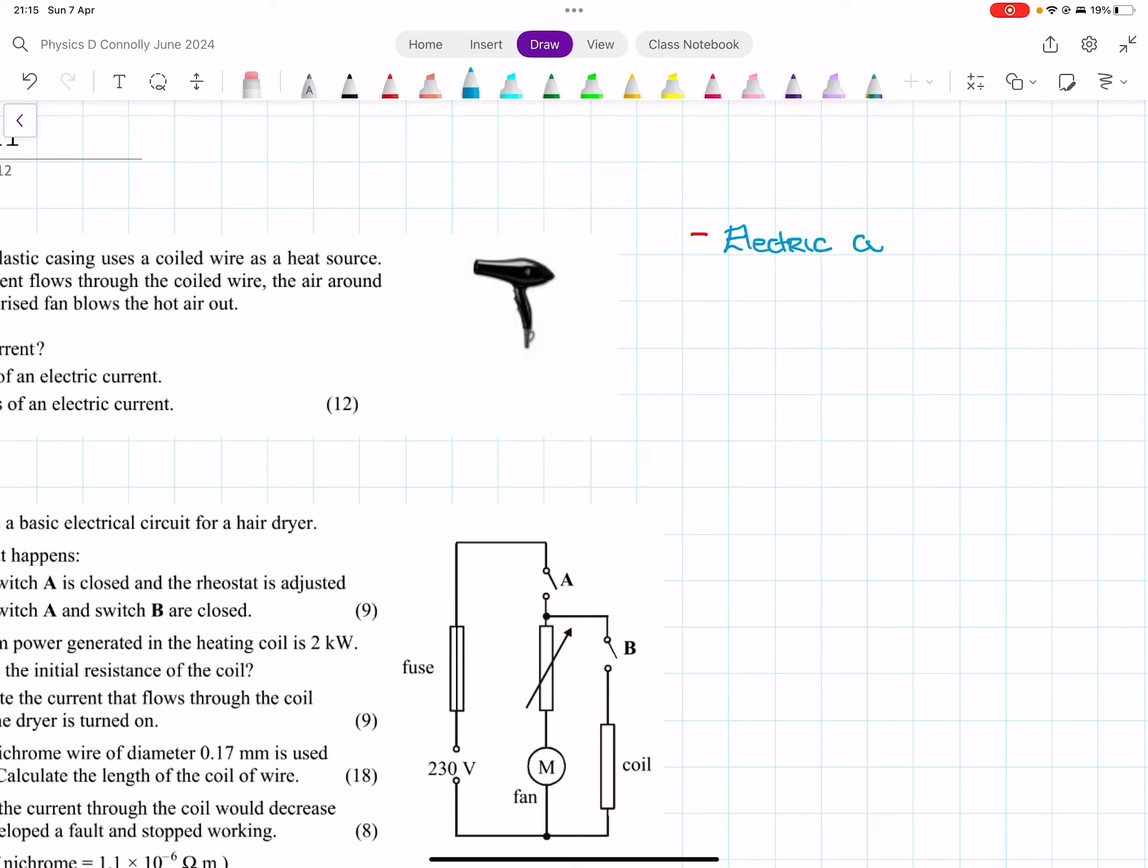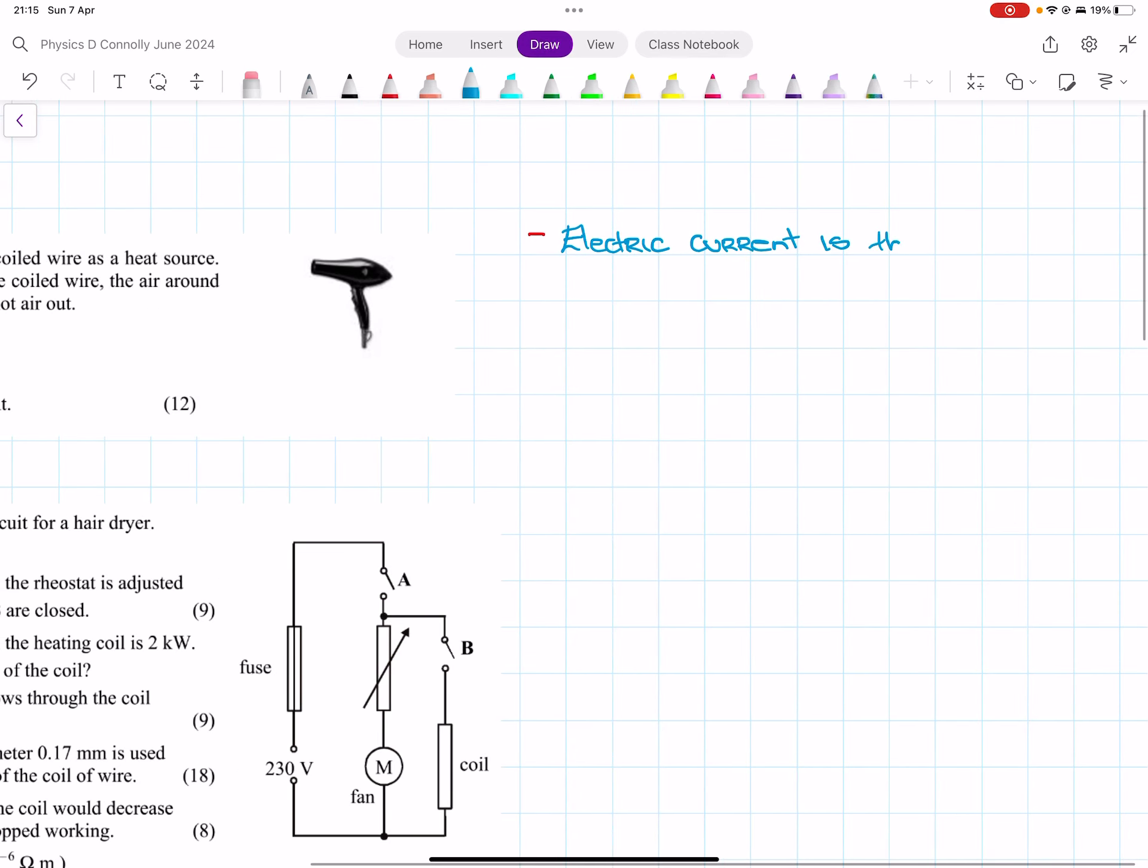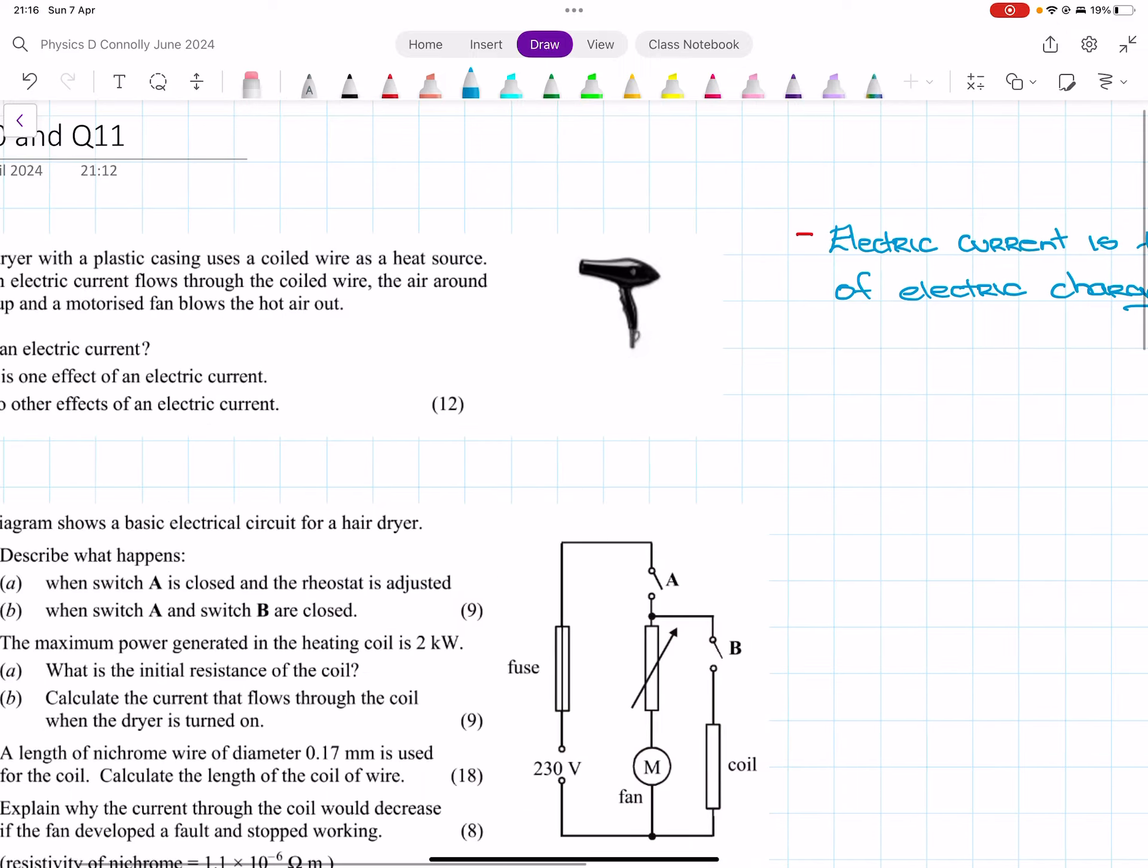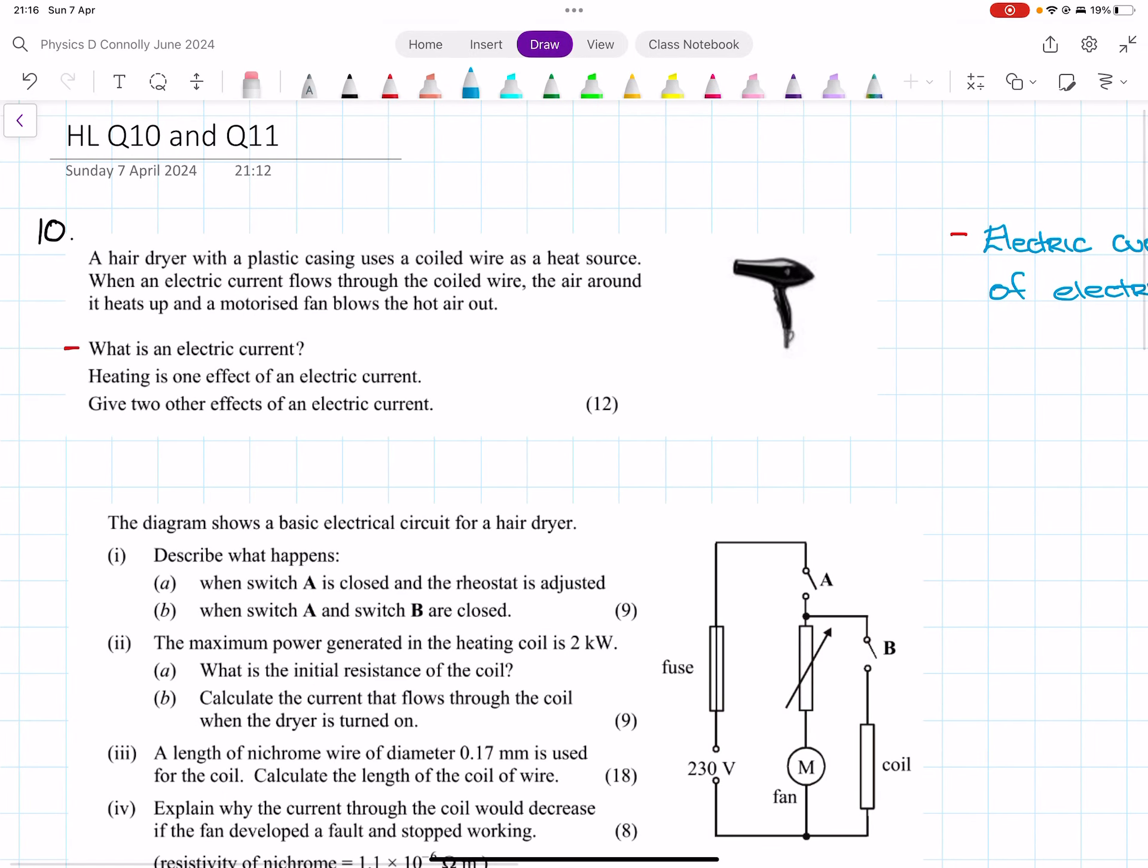Electric current is the flow of electric charge. An example of a flowing charge, and probably a specific example to this, would be the flow of electrons, because in a coil it would be electrons. Heating is one effect of an electric current. Give two others.